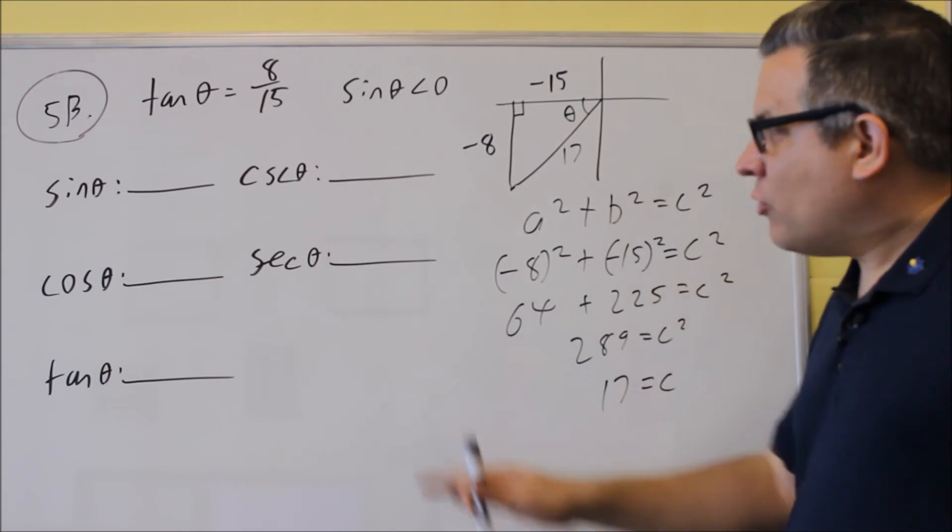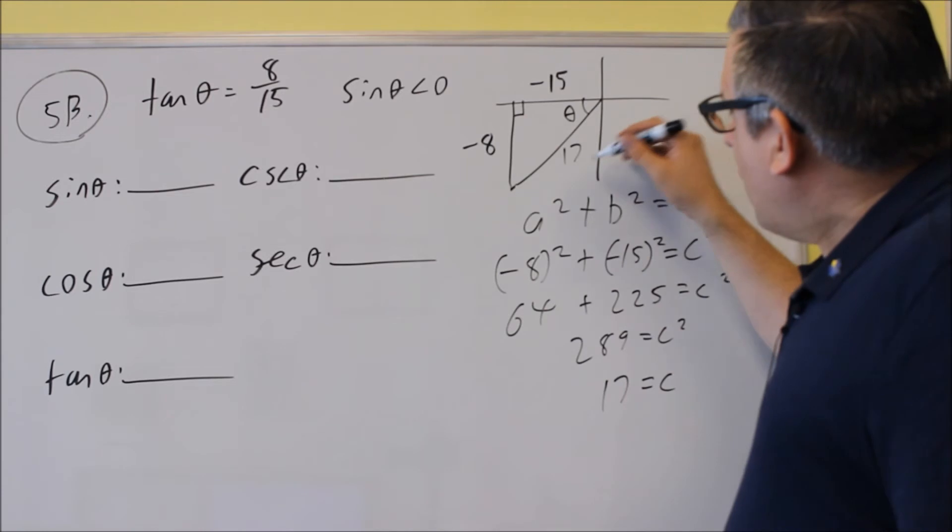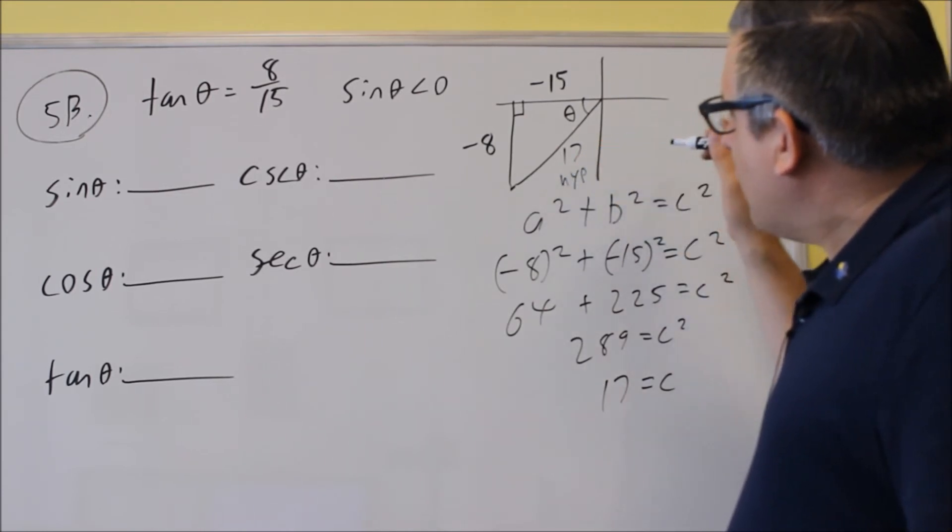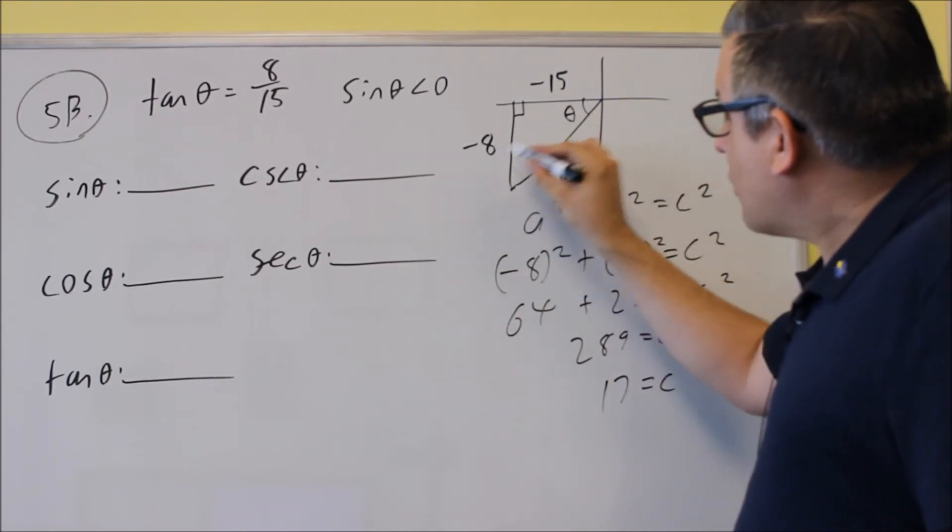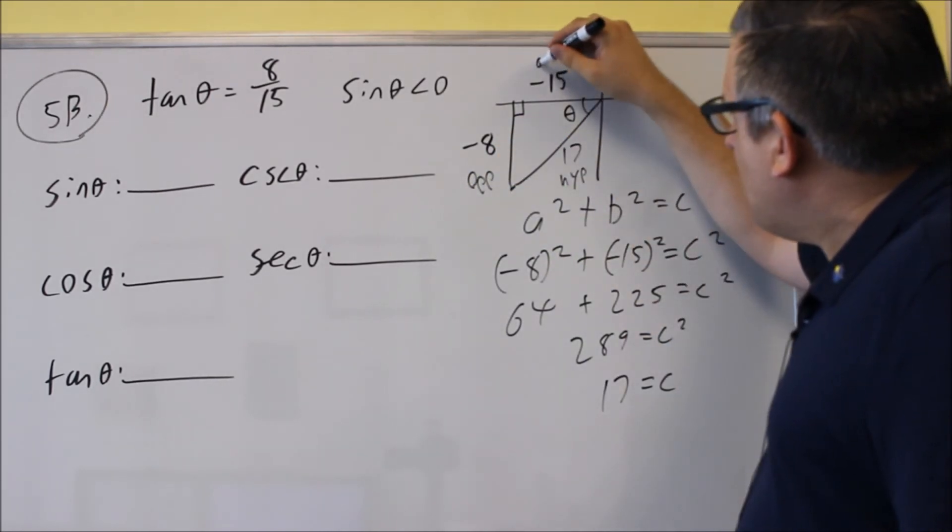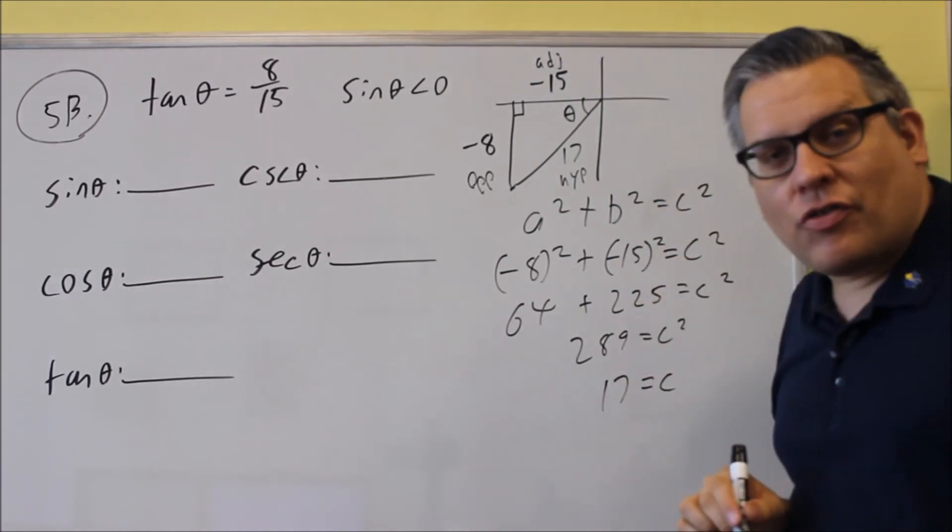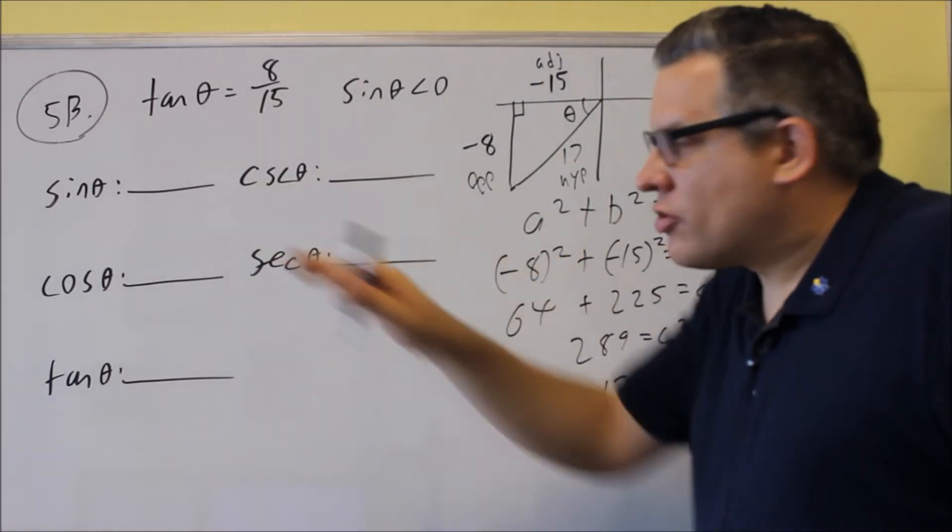Now that that's complete, we can again fill in this using the definitions. Now 17 is going to be hypotenuse. Across the triangle from the theta, this is our opposite side. So negative 8 is opposite. That means that the adjacent side would be negative 15. We use the definitions to put that in.